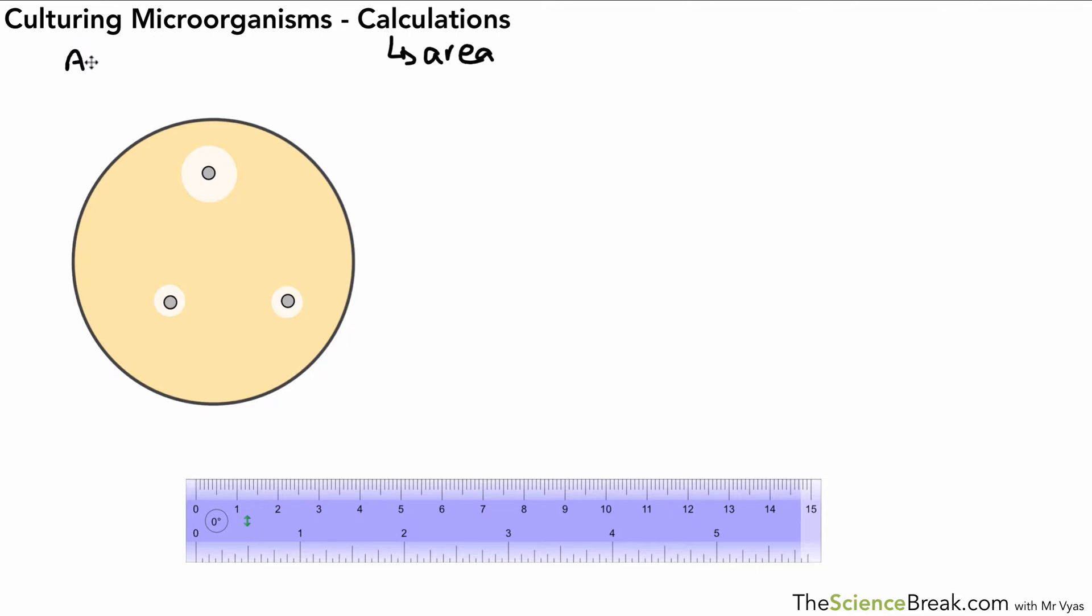For this example, we're going to look at calculating area. Here we've got an agar gel plate with bacteria growing, shown by the orangey colored area. We also have these circles that show a zone or area where the bacteria are dead. Why are they dead? That area is clear. Why are they dead? Because we are testing antibiotics.